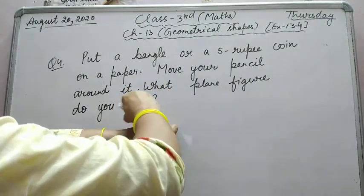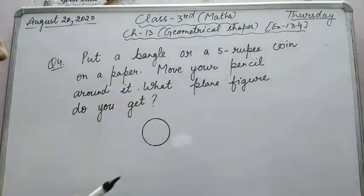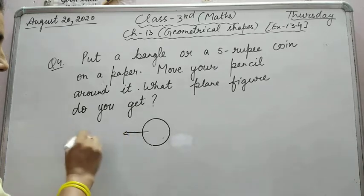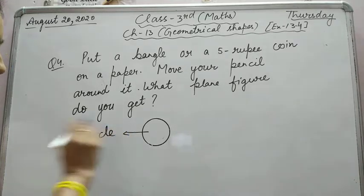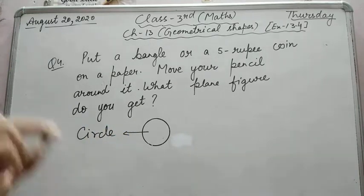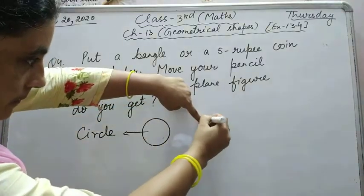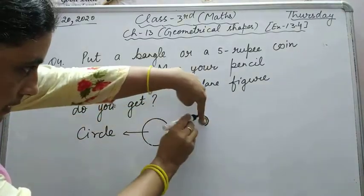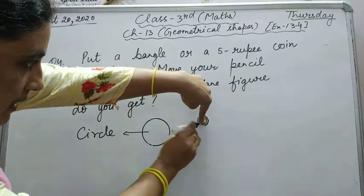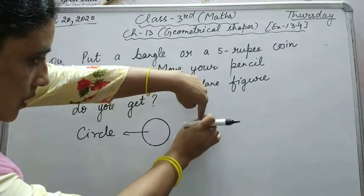So you can draw around it. You have to guess what figure this will be. This is the shape of a circle. In the case of five rupees coin, same, you get a circle.